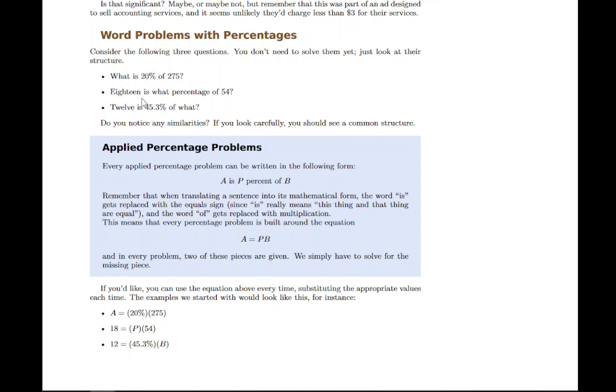Something is some percentage of something else. So there's three numbers that we can use. The first number is some percentage of the second number. So there's the two numbers and the percentage. Because of that, there's three types of problems we can ask, one where each of them is unknown.